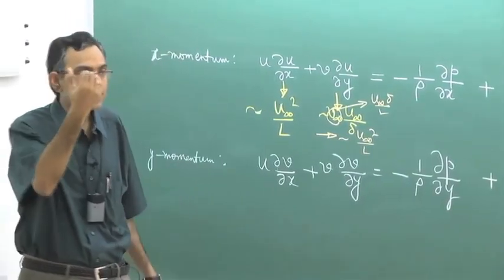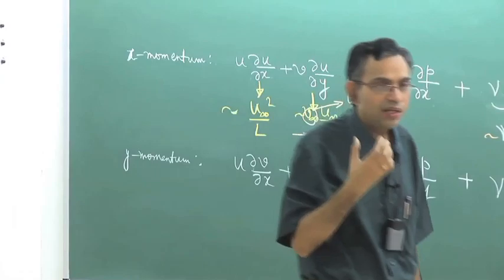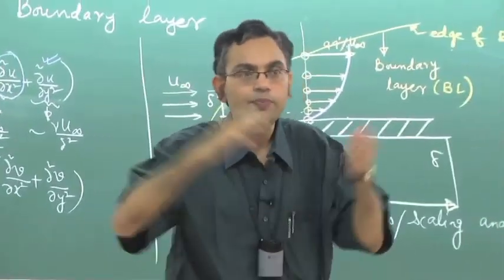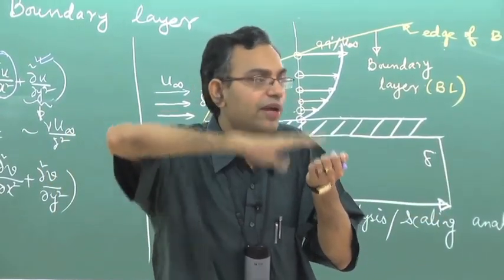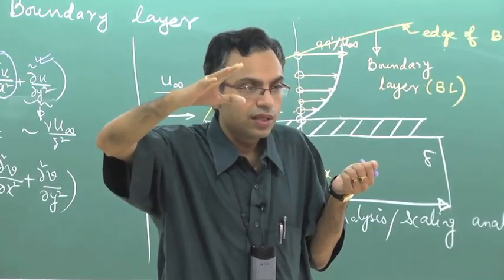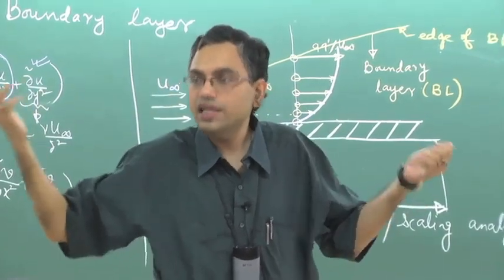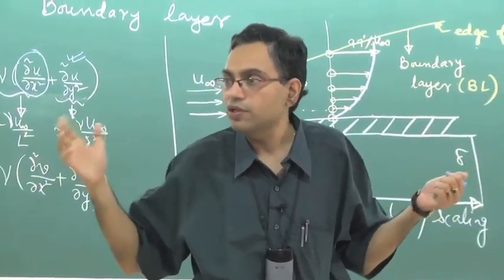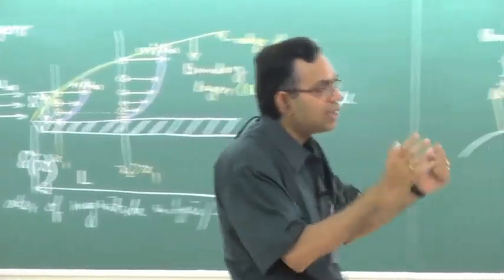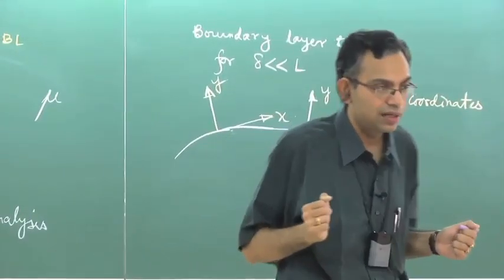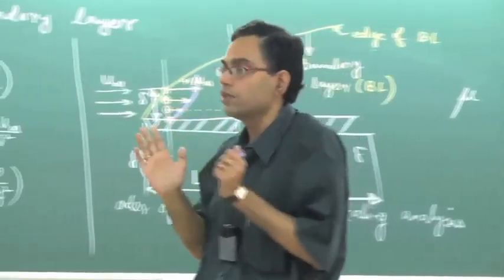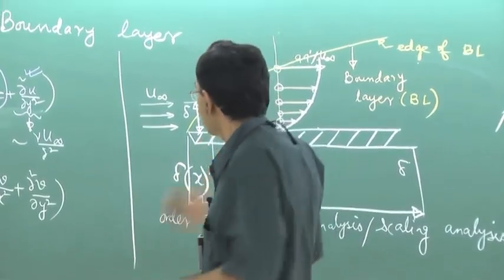You can always ask: given a practical problem, say the wing of an aircraft with air flowing over it, how do you know whether delta is much less than L or not? As an engineer, how do you conclude whether the boundary layer theory is applicable? We will answer this question shortly.